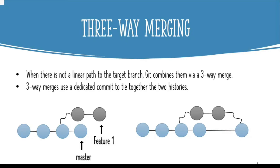To perform a three-way merge successfully, git tries to figure out how to combine both snapshots. If the changes were made in different files or in different parts of the same file, git will take both changes and put them together in the result. But if the changes are made on the same part of the same file, git won't know how to merge those changes and the attempt will result in a merge conflict.